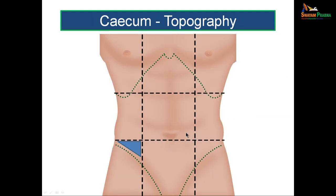The surface marking of the cecum is a triangular area bounded by the right lateral plane (midclavicular line) on the right side, the transtubercular plane at the level of L5 across the tubercles of the ileum, and the groin on the right side inferiorly. This triangular area is where the cecum lies.